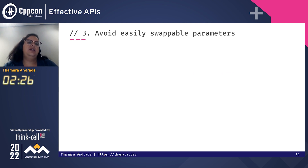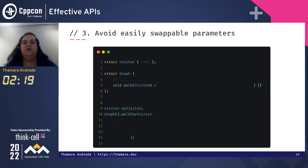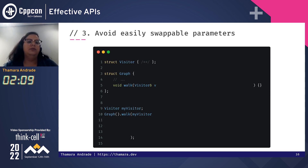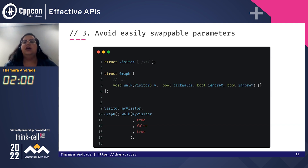The third tip is to avoid easily swappable parameters. To illustrate that, I have a simple visitor pattern on a graph that can walk, and to walk it receives a visitor. As we start to improve this API — for example, allowing the user to select whether they want to go backwards or forwards, or to ignore something — as the API grows, it becomes very easy to accidentally swap all of these booleans or whatever type it is.